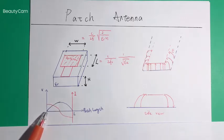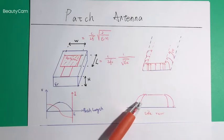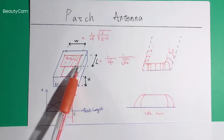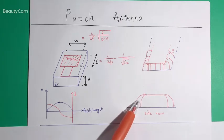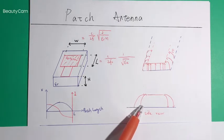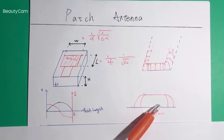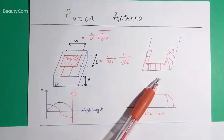The voltage is zero at here and here. If we look at the side view of the antenna, we will notice that on this edge and this edge the E-field is pointed in the same direction, which means the E-field cannot be canceled with each other.